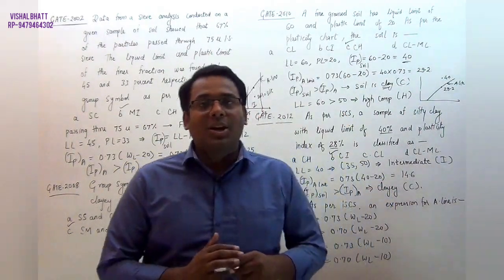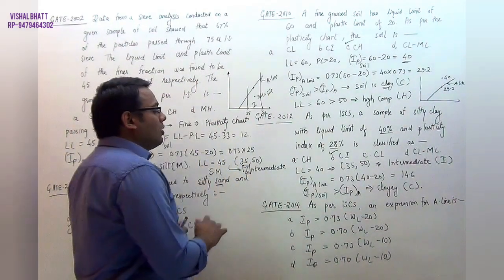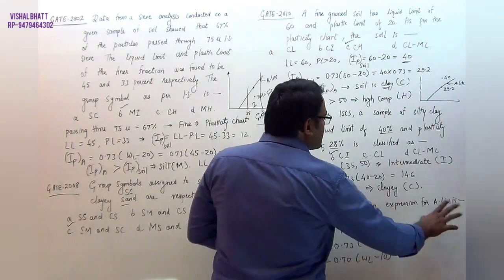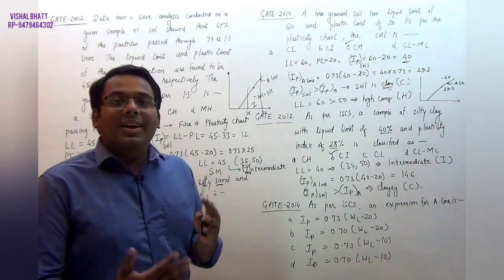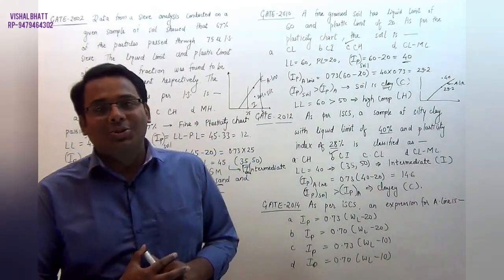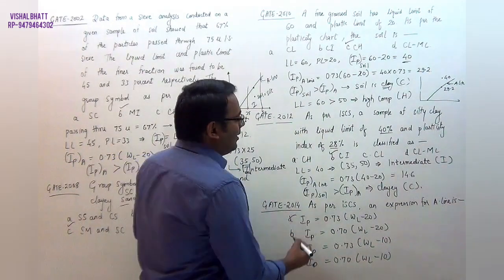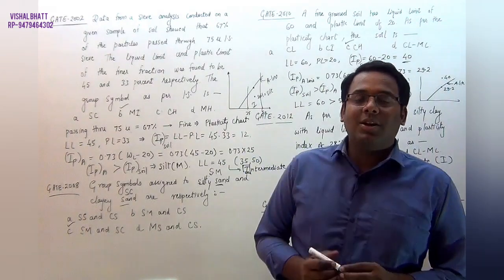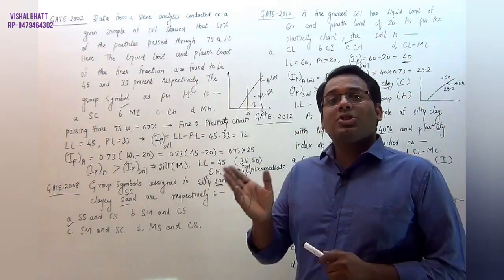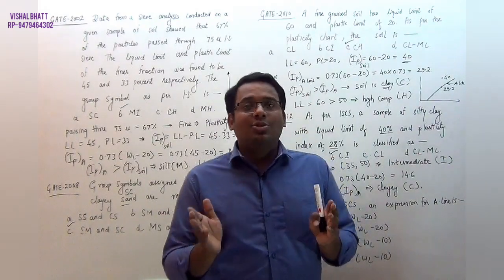One more question from GATE 2014, a very simple question. As per IS code, the expression for the A-line is asked. This is a very easy question. We know the formula for A-line, you can write that option A will be the correct answer for this particular question. So these were some questions from our GATE previous years that were asked in soil classification.